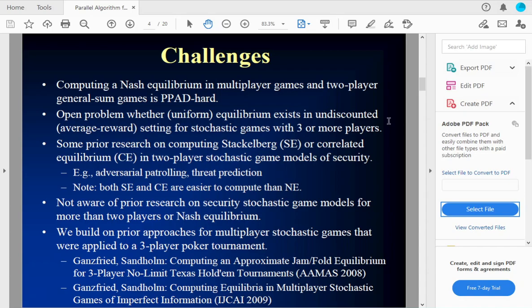So there's been some prior research on stochastic game models applied to security. These were for two-player games and for looking at Stackelberg and correlated equilibrium, which are both easier to compute the Nash equilibrium. The applications here included adversarial patrolling and threat prediction. Now I'm not aware of any prior research on national security game models that were for either more than two players or were for Nash equilibrium as opposed to correlated or Stackelberg equilibrium. So I'm going to present a new algorithm. It's going to build on some prior approaches that were applied for multiplayer stochastic games for a three-player poker tournament based on some research I did with Thomas Sandholm in 2008 and 2009. And so I'm going to discuss those approaches, how we build on them and apply them to national security.